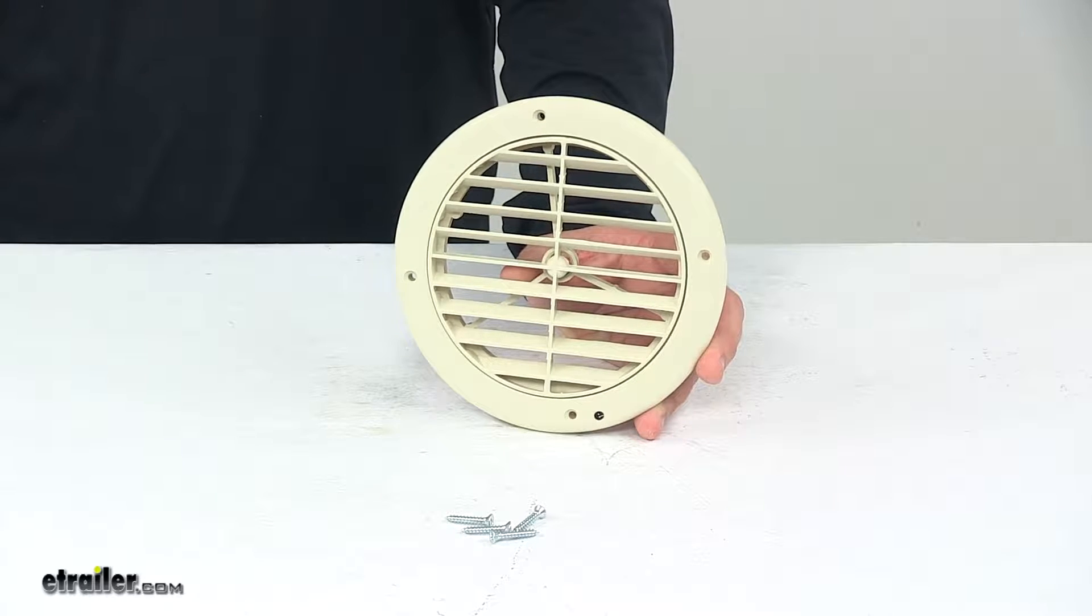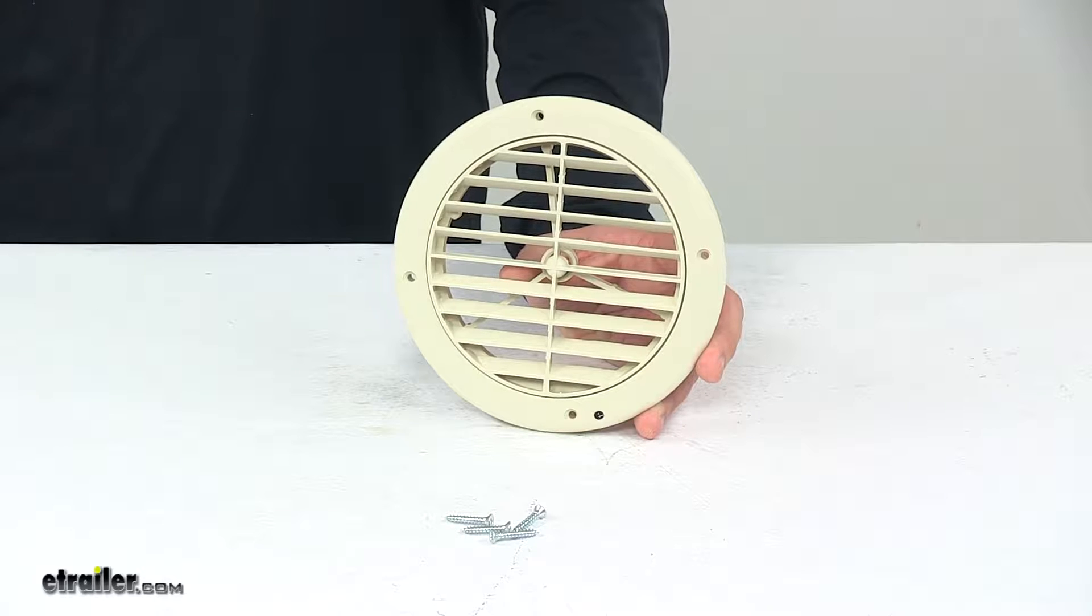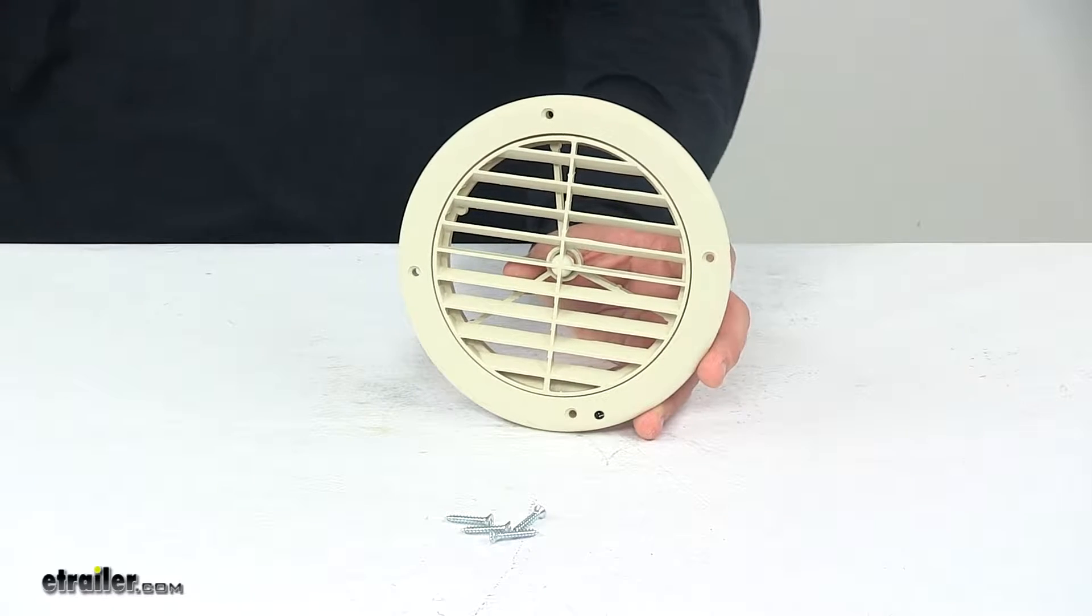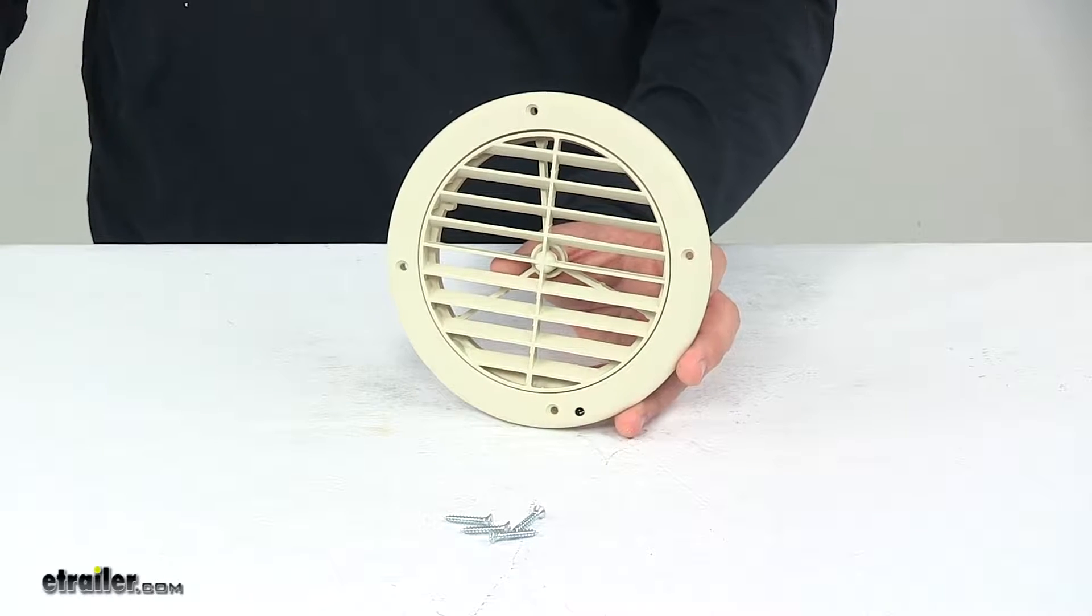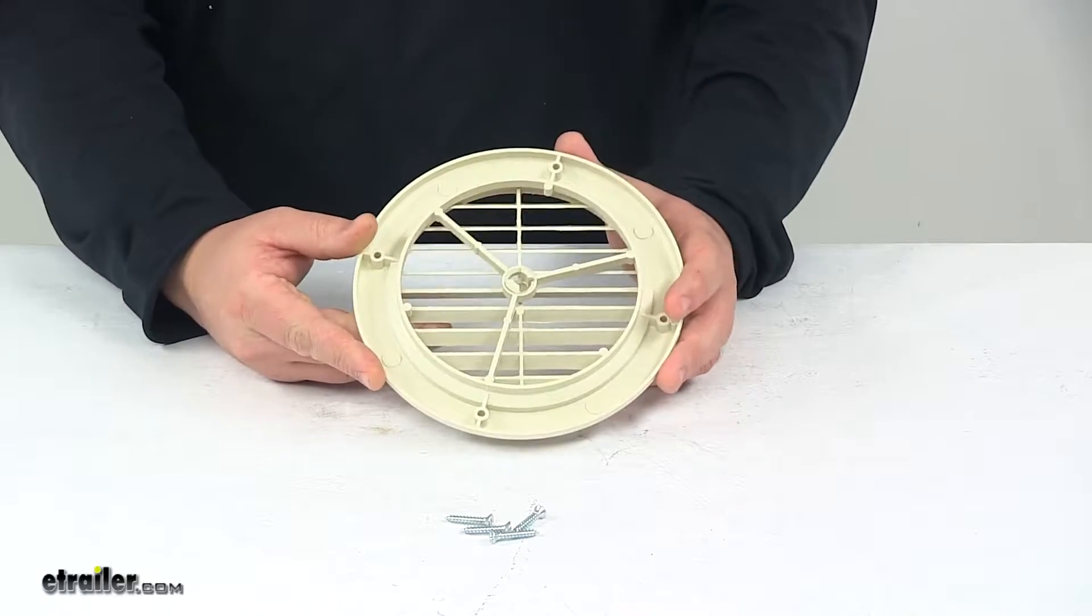Today we're taking a look at the Valterra heating and AC grill. The vent is beige in color and offers a nice clean look to the interior of your RV. It's made from durable plastic construction.